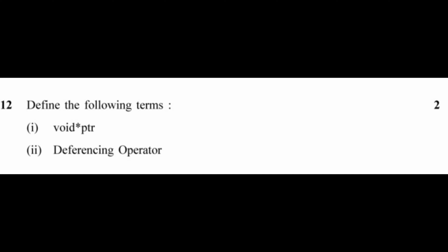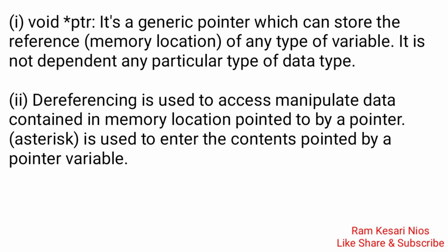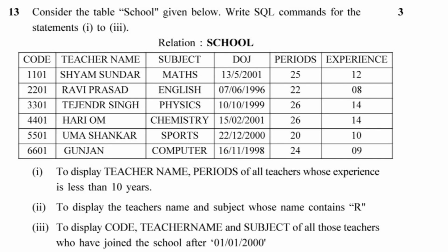Question 12: Define the following terms. 1. void* ptr: It is a generic pointer which can store the reference of any type of variable; it is not dependent on any particular data type. 2. Dereferencing operator: It is used to access and manipulate data contained in a memory location pointed to by a pointer; it is used to get the contents pointed by a pointer variable.